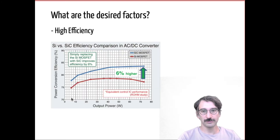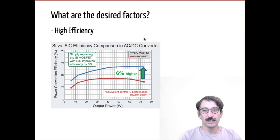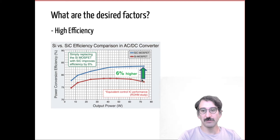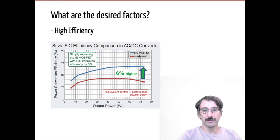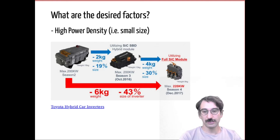Let's talk about the desired factors in a power electronic device. High efficiency is really important — we want to make our converters as efficient as possible. Here you can see the efficiency improvement by just changing the device from a silicon MOSFET to silicon carbide, which we will talk about in the following weeks.